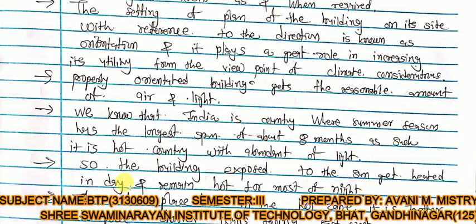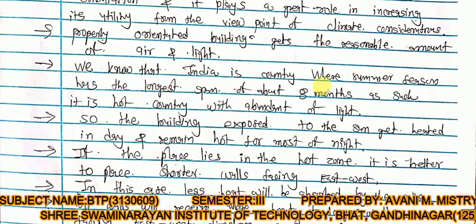So the building exposed to the sun gets heated in the day and remains hot for most of the night. Since summer lasts 8 months in India, we must keep this in mind when planning. If the place lies in the hot zone, it is better to place the shorter walls facing east or west. In this case, less heat will be absorbed by the walls, keeping the room temperature lower.